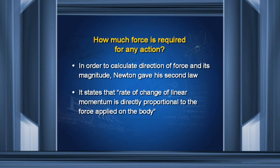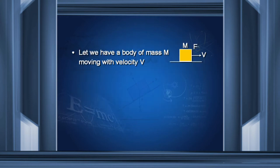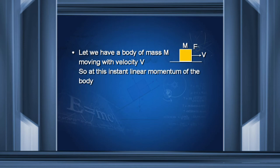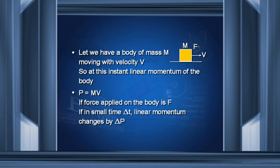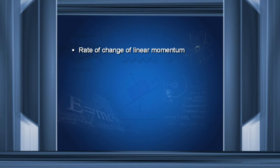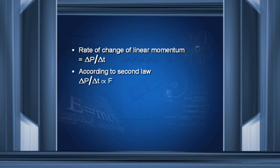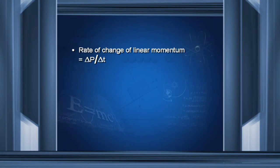The second law states that the rate of change of linear momentum is directly proportional to the force applied on the body. If a body of mass M moves with velocity V, its linear momentum is MV. If force F is applied and in small time delta T, linear momentum changes by delta P, then the rate of change is delta P upon delta T, which is directly proportional to F. Putting a coefficient of proportionality K, we get F equals K times delta P upon delta T.